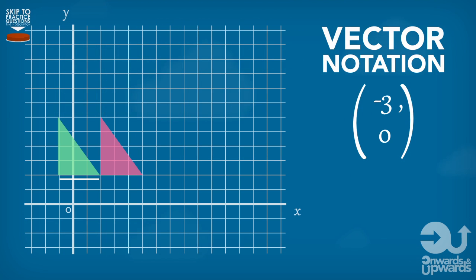Now the bottom number in our column vector tells us how far up or down the shape needs to move. Once again, if we have a positive number, that means our shape moves up. And if we have a negative number, that means our shape moves down.